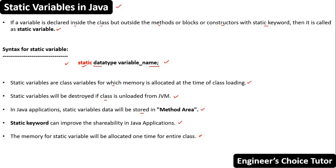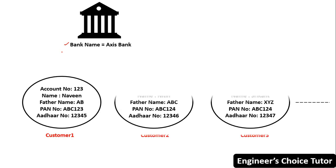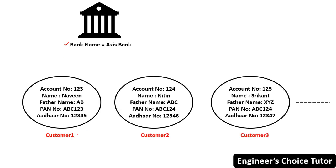Now let's understand the concept of static variable with a real-time example. Suppose there is one bank and the bank name is Axis Bank. A bank can have lakhs of customers. The details like account number, name of the customer, father name, band number, and Aadhaar number can vary from customer to customer. For every customer, the field values are changing — account number is different for each customer.